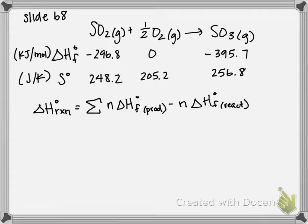This is slide 68 of our chapter 19 PowerPoint. The example problem states one of the initial steps in the formation of acid rain is the oxidation of the pollutant SO2 to SO3 by the following reaction. We need to calculate delta G at 25 degrees Celsius and determine whether the reaction is spontaneous.